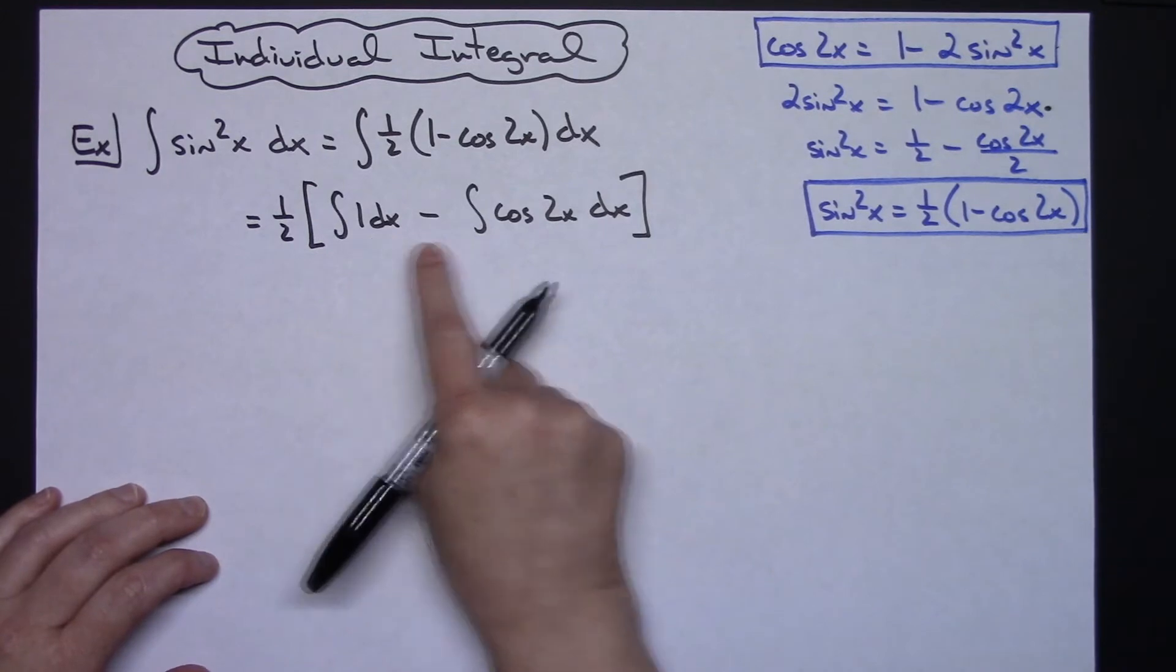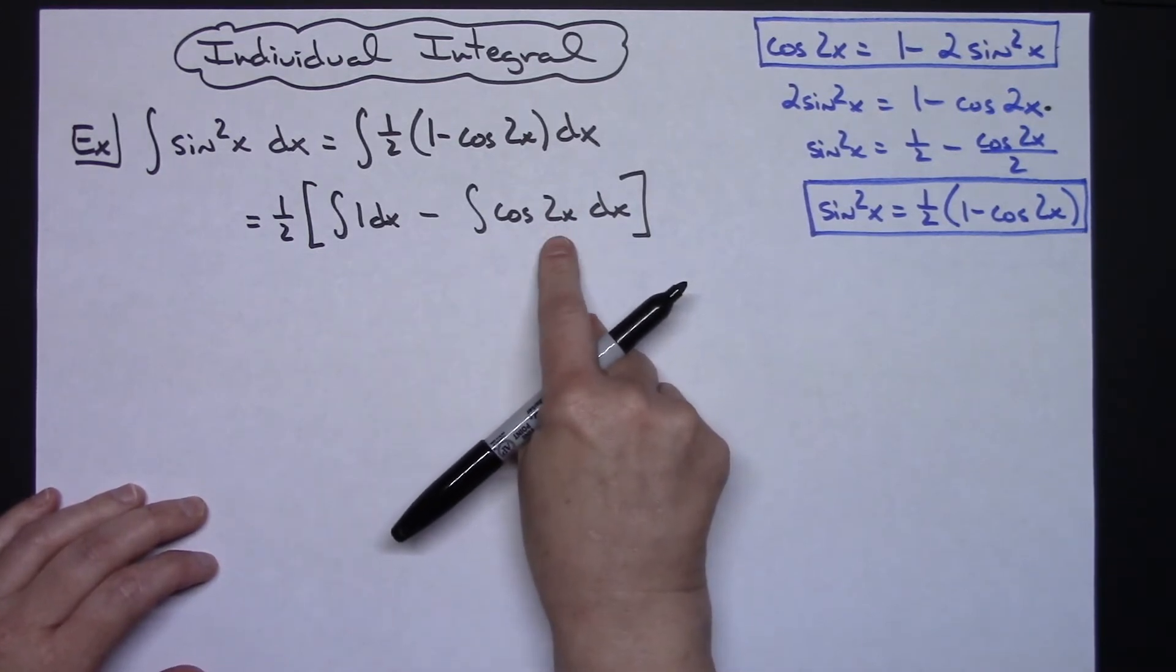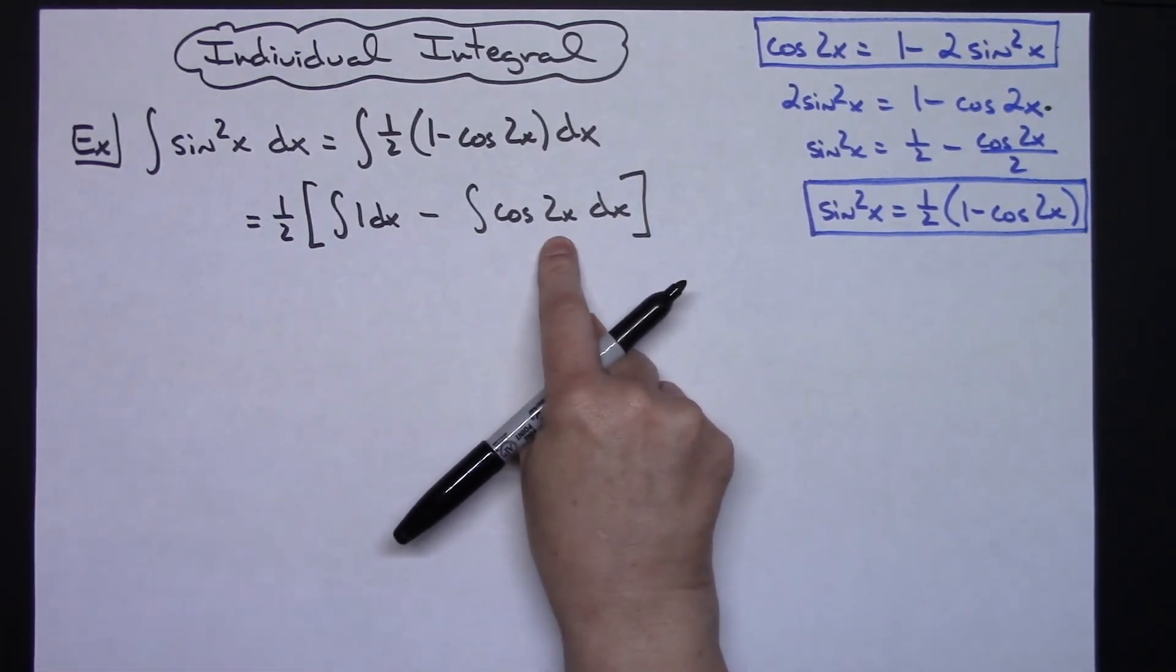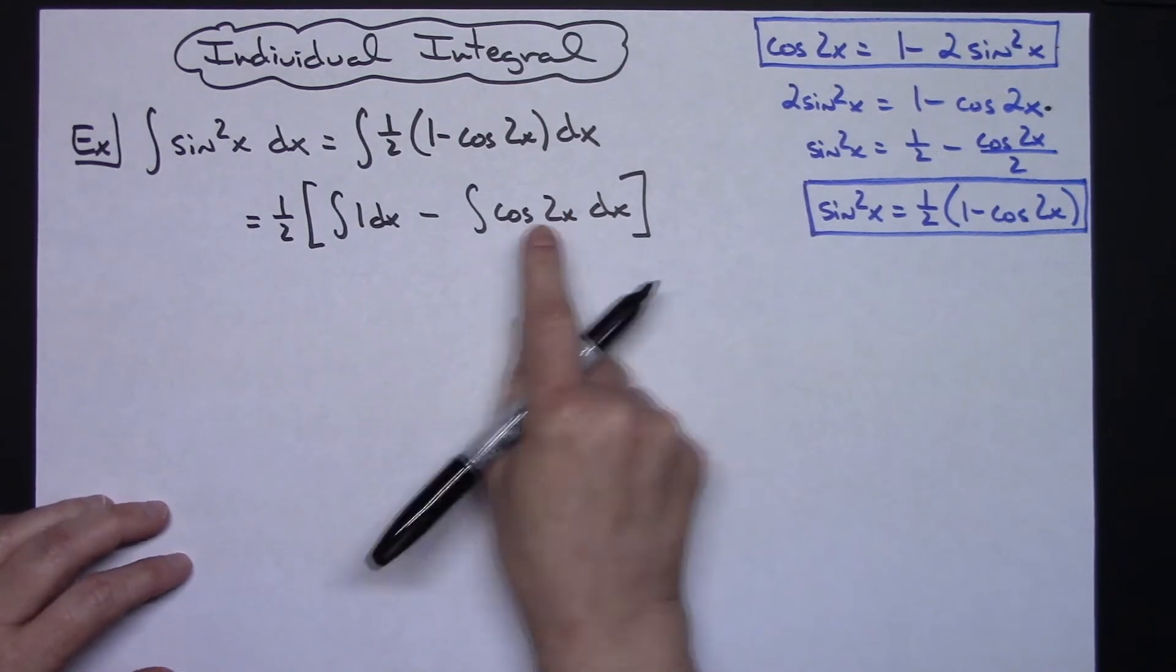I'll have the integral of 1 dx minus the integral of cosine 2x dx. This 1 is going to be easy to integrate. This also is going to be easy to integrate. This is going to be a straight U substitution. We'll go ahead and show most of those steps for that.